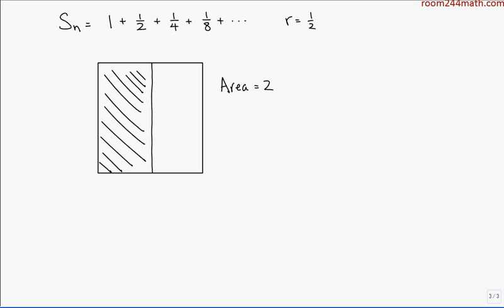Now the second partial sum will be the sum of the first two terms, which means we have 1 plus 1 half. Well, we've already got the 1, which means the other side is also equal to 1. So half of that just means, well, chop it in half like that. So there's the second partial sum.